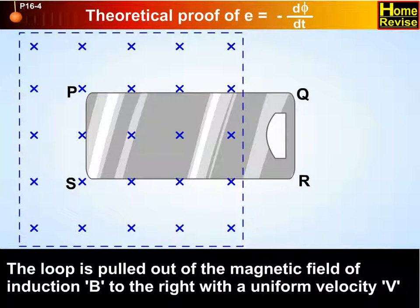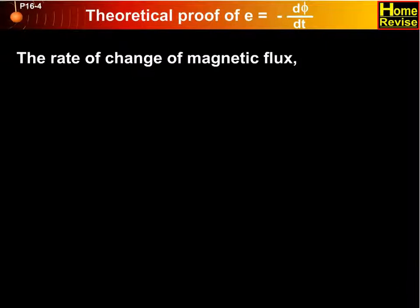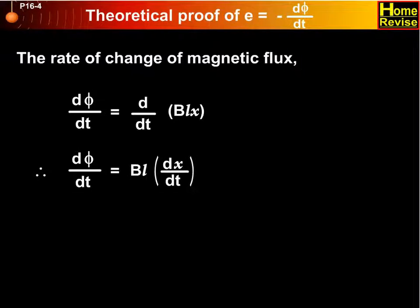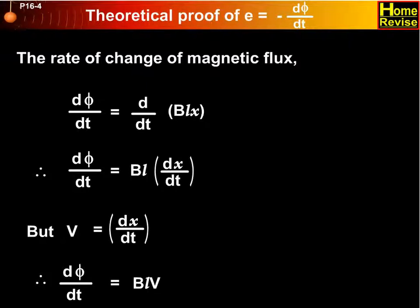The loop is pulled out of the magnetic field of induction B to the right with uniform velocity v. The rate of change of magnetic flux d phi upon dt equals d upon dt into BLx. That equals BL into dx upon dt. But v equals dx upon dt. Therefore, d phi upon dt equals BLv.